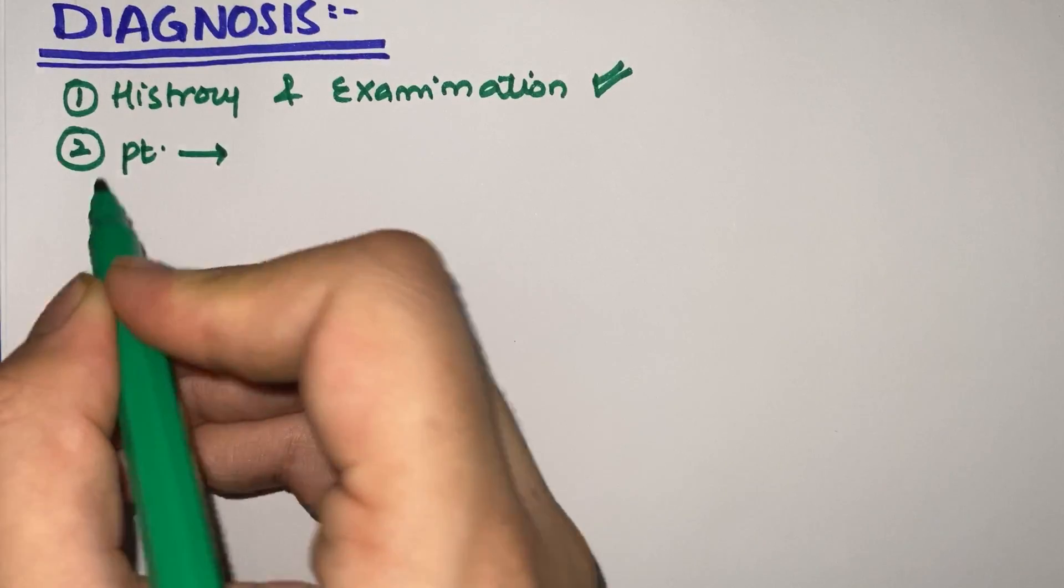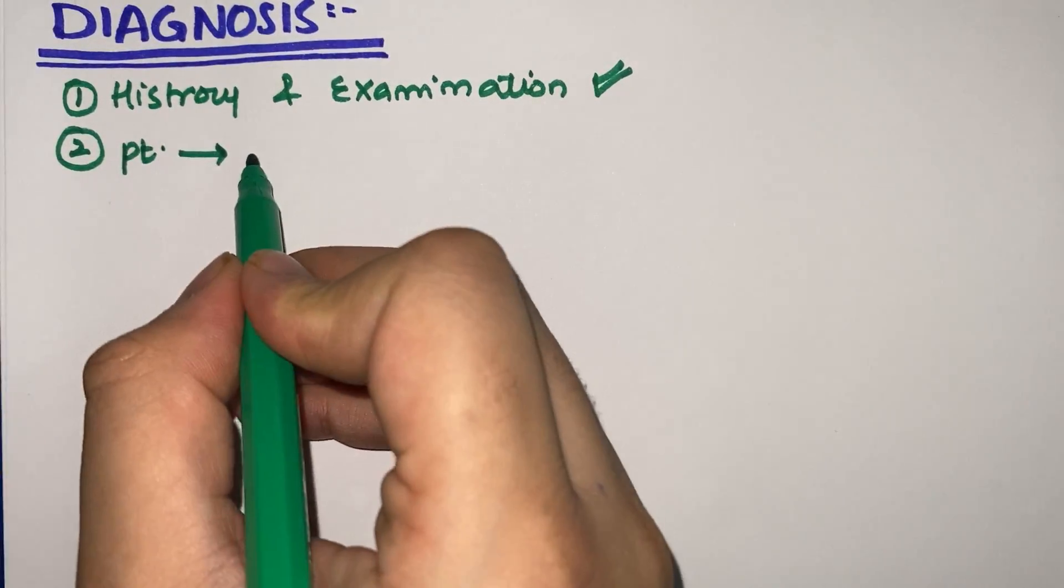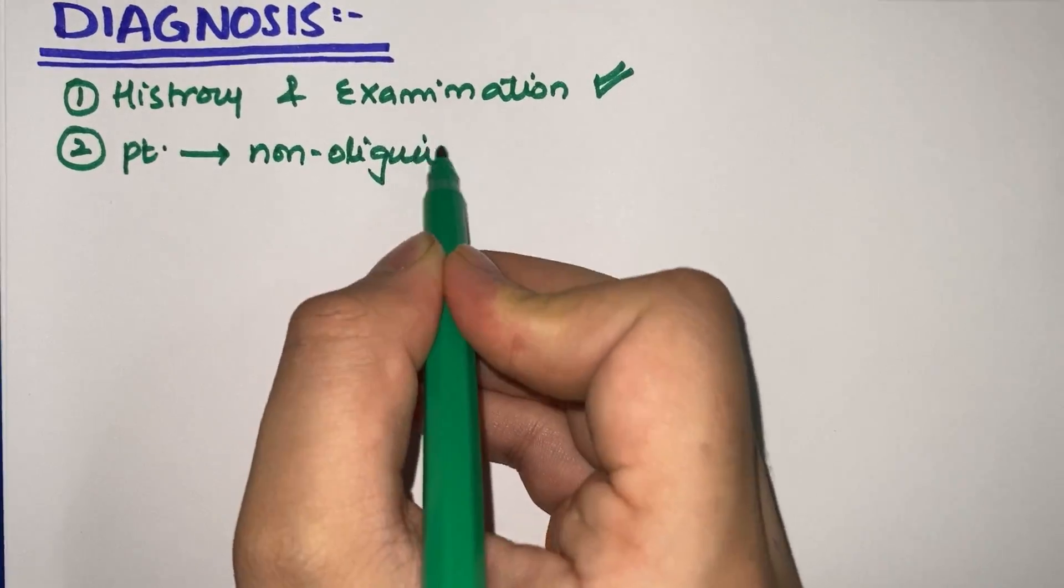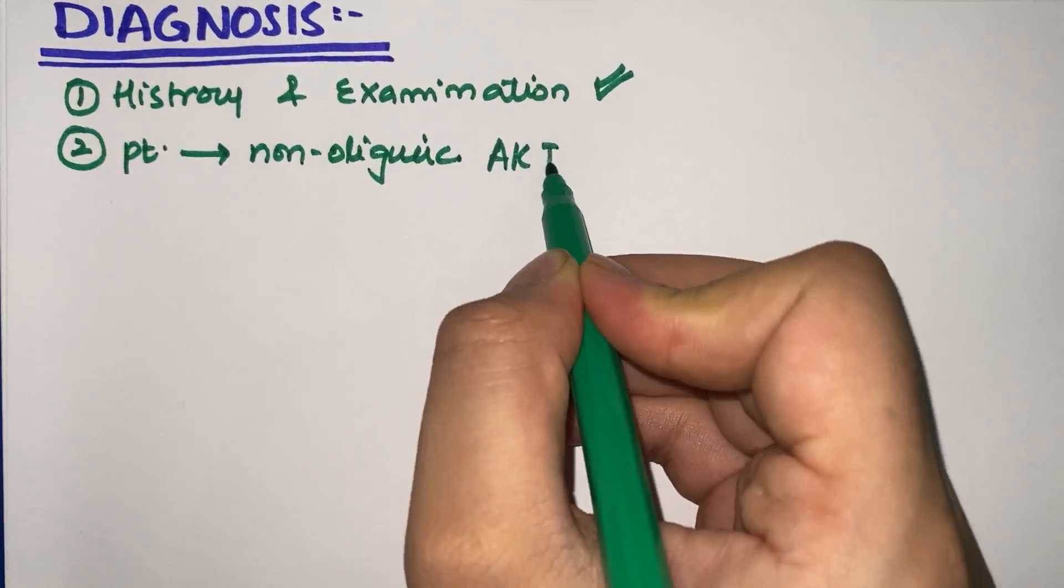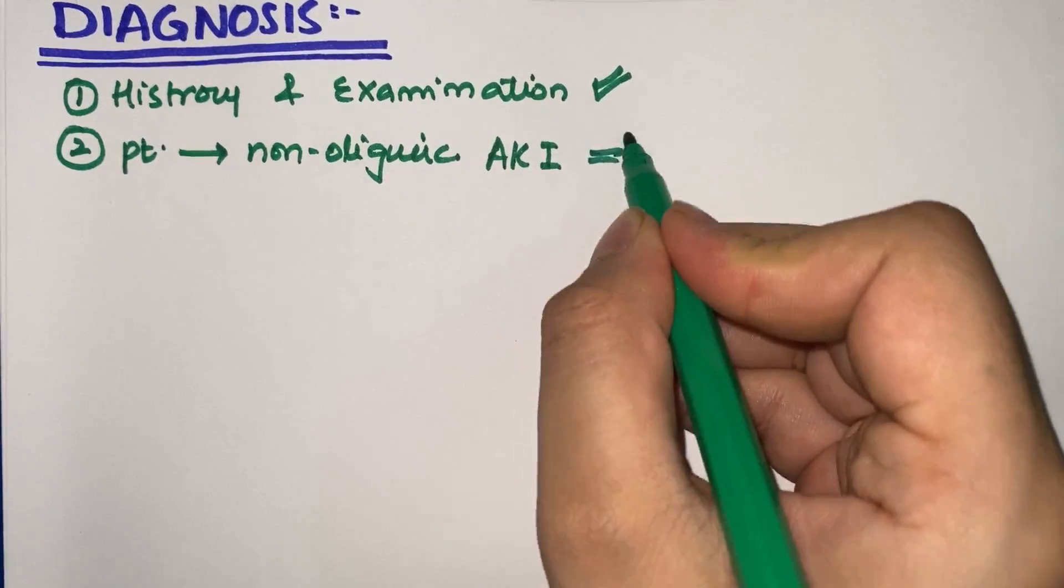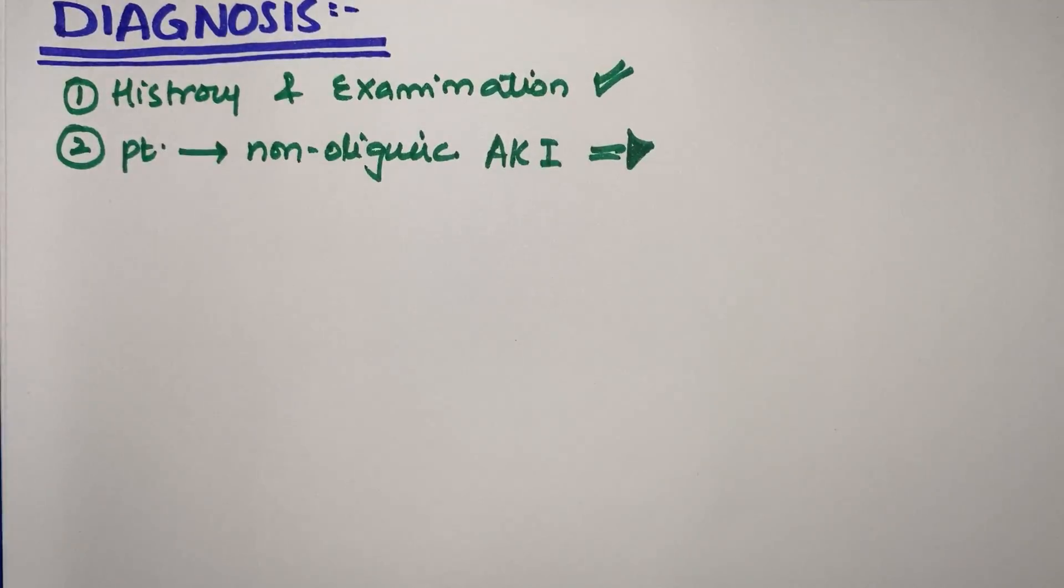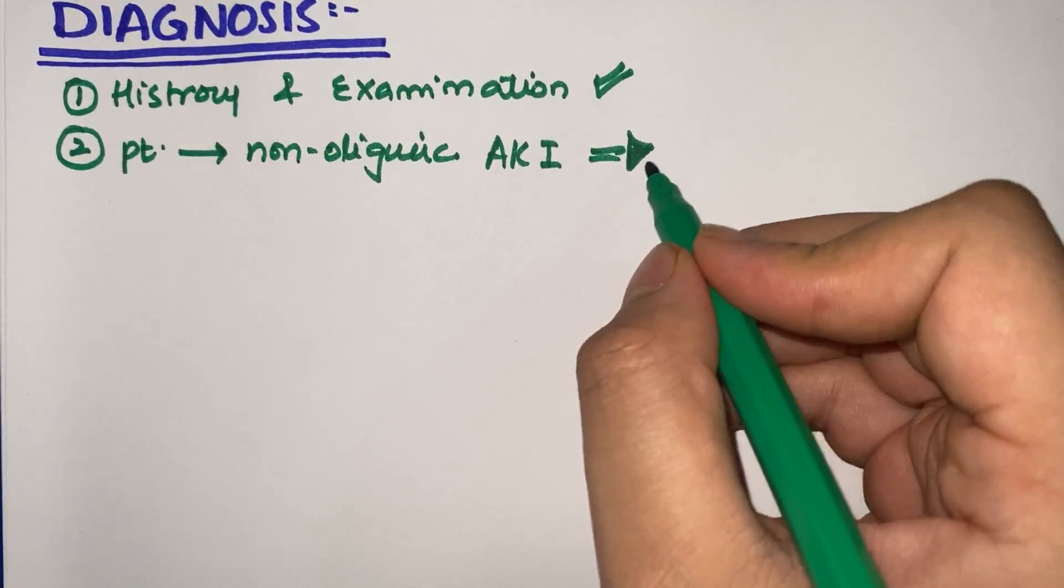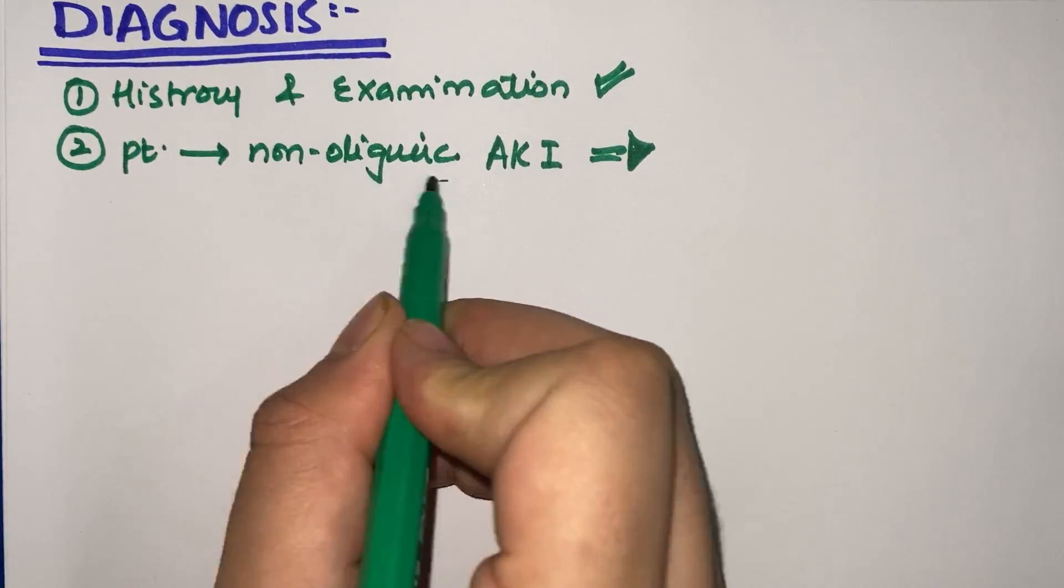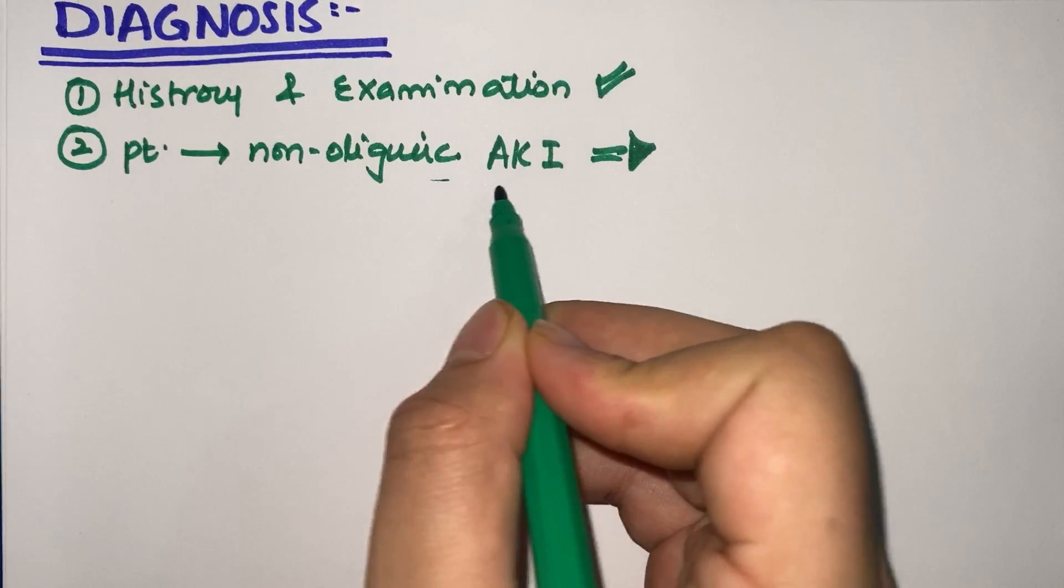If a patient presents with non-oliguric AKI (acute kidney injury)—meaning there is no decrease in urine production but they have symptoms of acute kidney injury—you can suspect acute interstitial nephritis. This is an important clinical clue to look for.